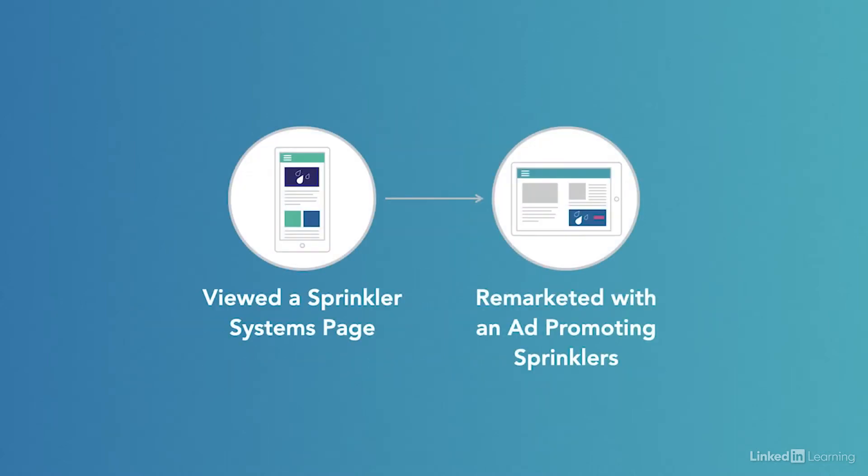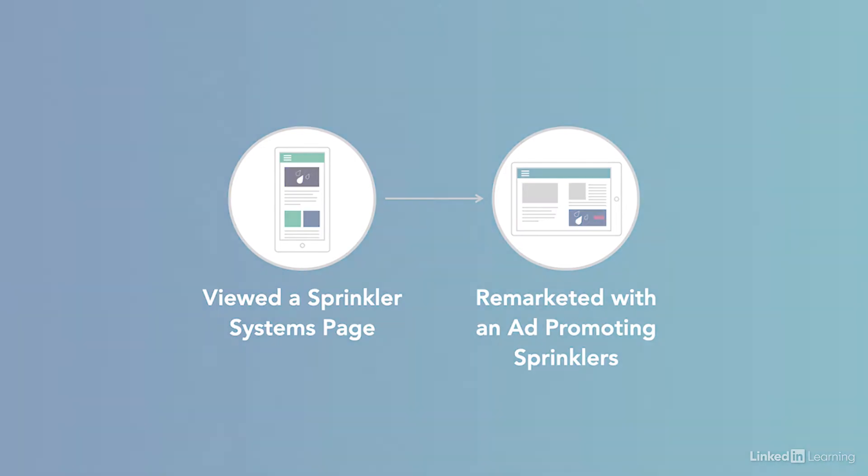Use your visitor's website activity to identify their interests and intent, and use that to determine which content to remarket to them. For example, if you are a lawn care service, create separate audiences for folks looking at sprinkler systems versus landscaping versus mowing services, and remarket them with relevant content to what they viewed on your site.